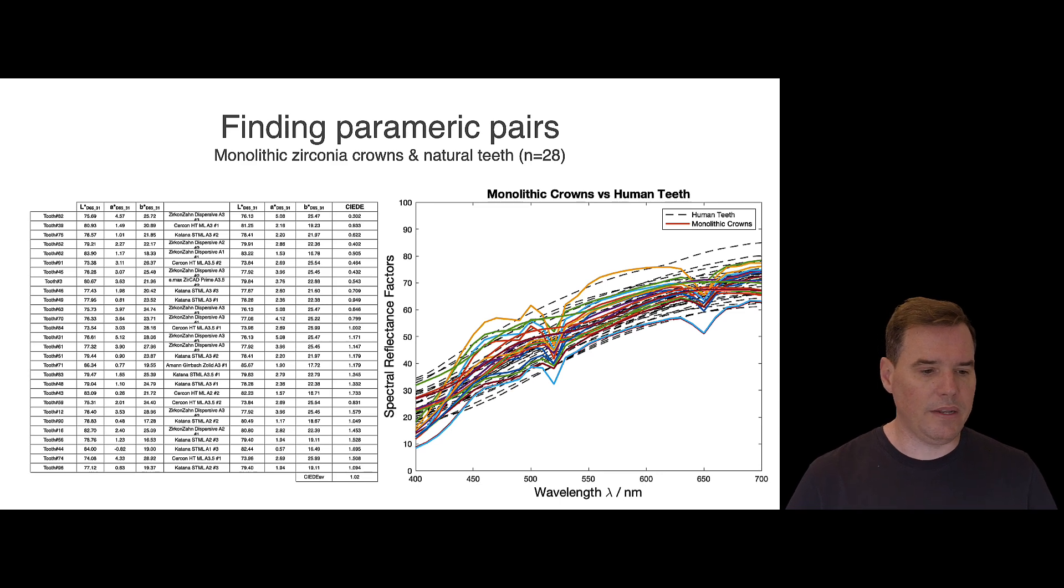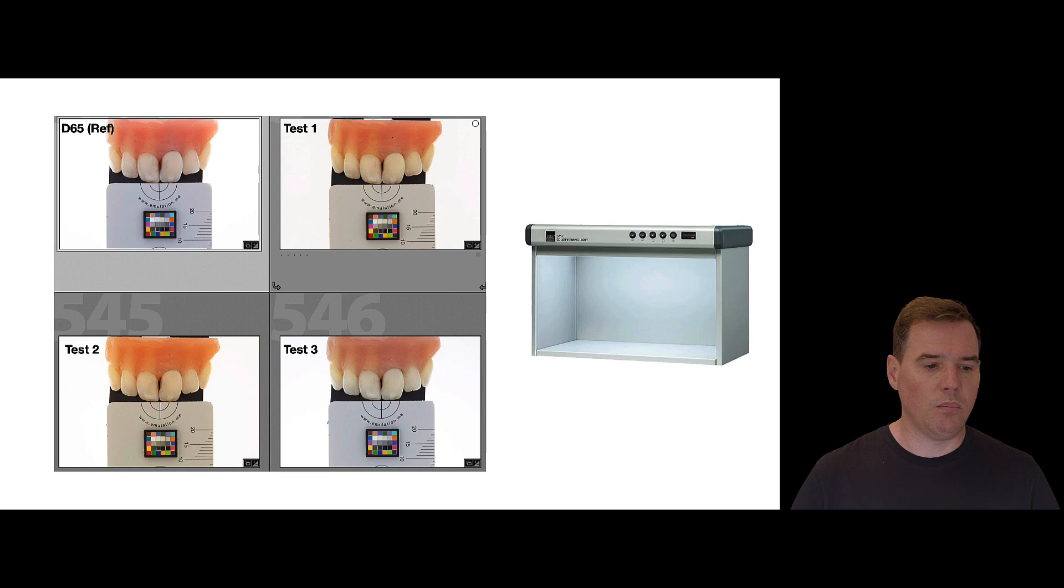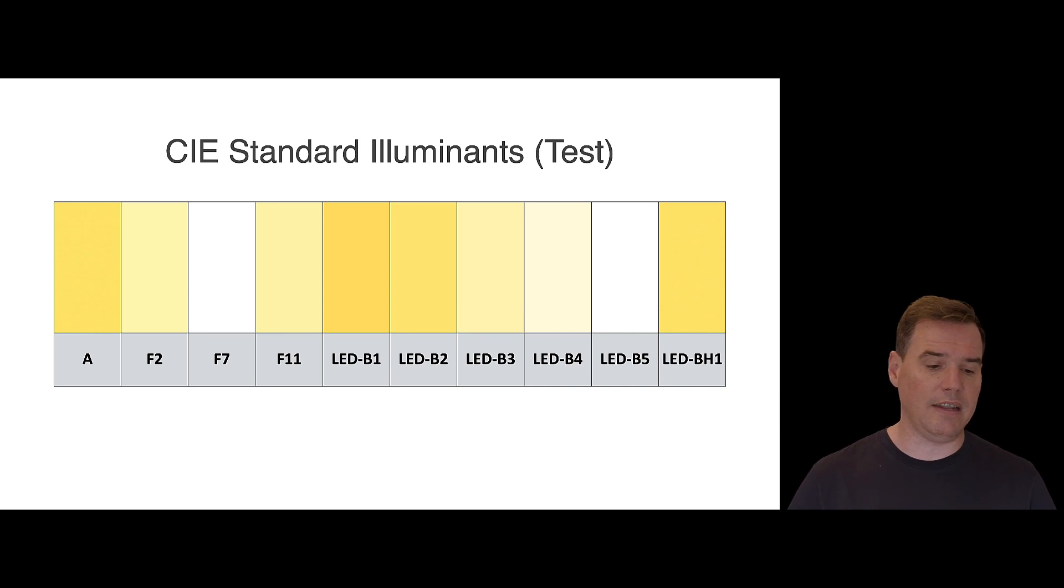And then what we did is we measured the color difference between these pairs of samples under the reference condition, which is illuminant D65. And then we measured the color difference again under different test conditions. And so the different illuminants that we used were illuminant A, F2, F7, F11, and then the new LED illuminants that the CIE has recently come up with. And these data were computed and I will explain this in a minute.